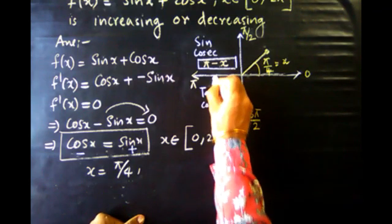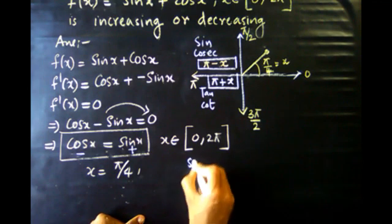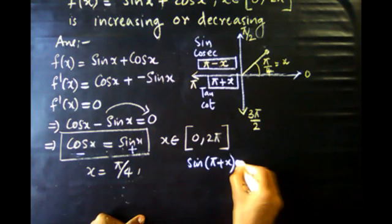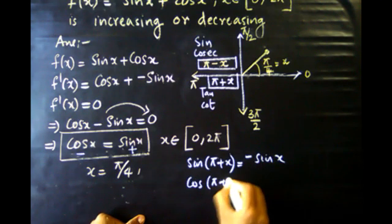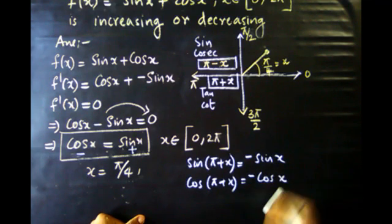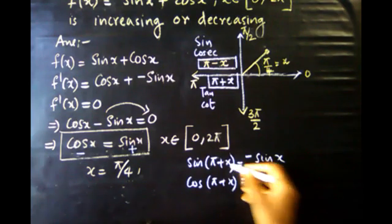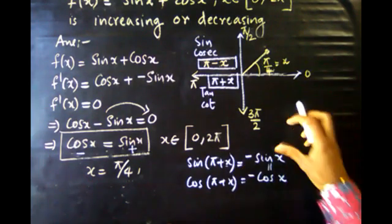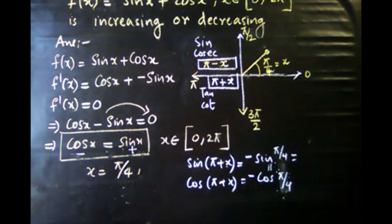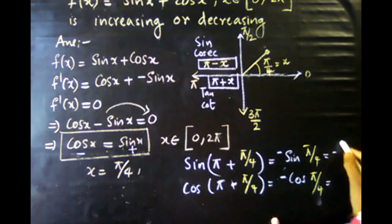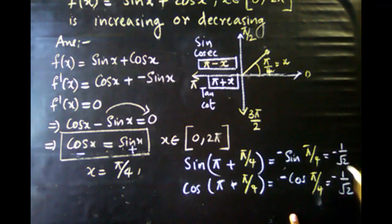For the third quadrant, we use the pi plus x formula. Sin(pi + x) = minus sin x and cos(pi + x) = minus cos x. So with x = pi by 4: minus sin(pi/4) = minus 1 by root 2, and minus cos(pi/4) = minus 1 by root 2.